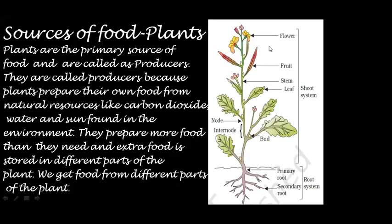Plants are the primary source of food and are called producers. They are called producers because plants prepare their own food from natural resources like carbon dioxide, water and sunlight found in the environment. This process of preparing food by plants is called photosynthesis. They prepare more food than they need and extra food is stored in different parts of the plant, so we get food from different parts of the plant.